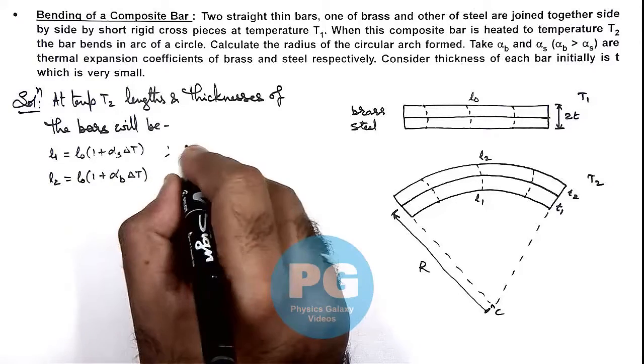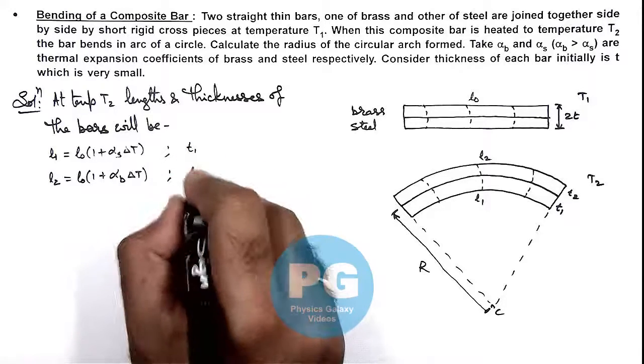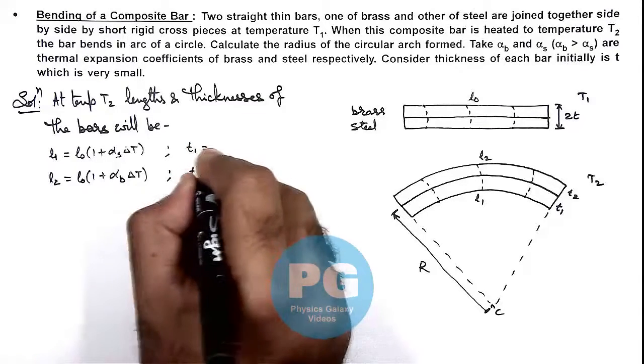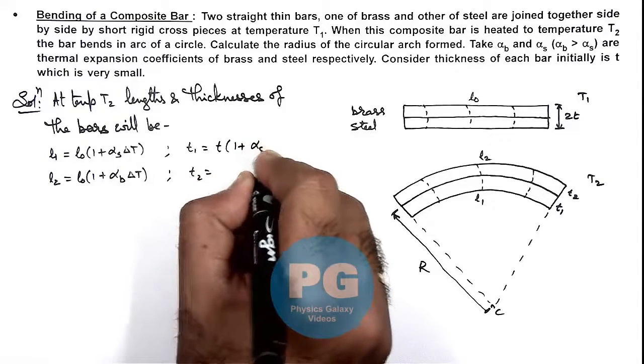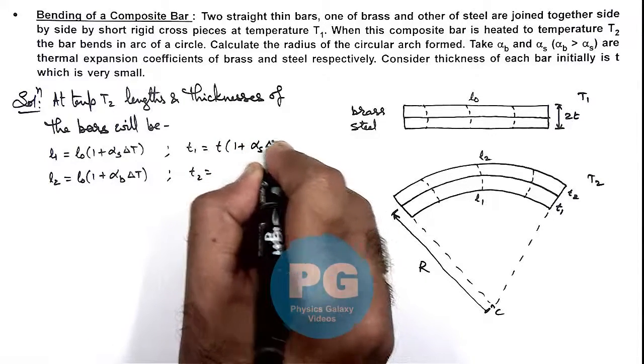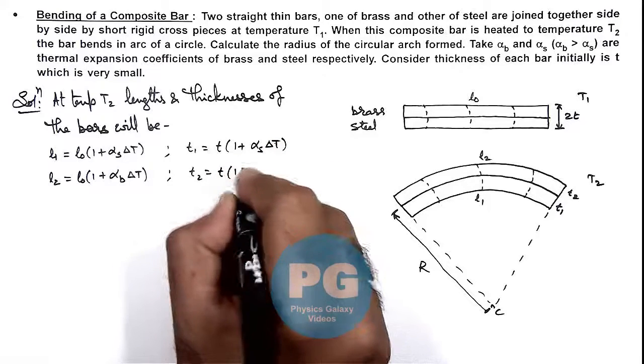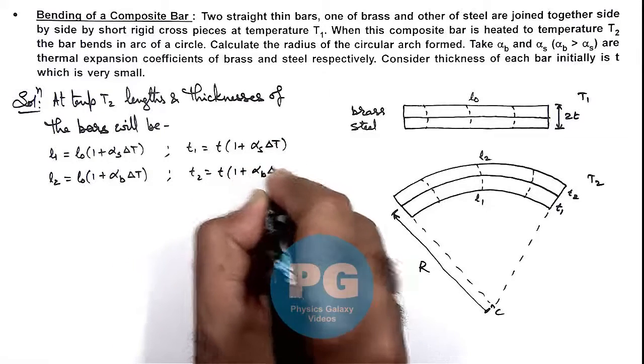Similarly, if we talk about thicknesses T1 and T2, these can also be calculated as t(1 + alpha_s × ΔT), and this is t(1 + alpha_b × ΔT).